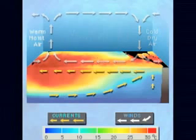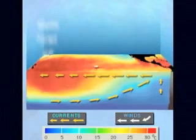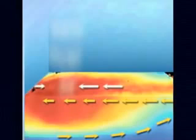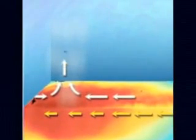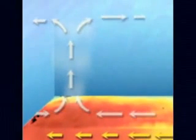As warm, moist air rises in the western tropical Pacific, its temperature drops. The cooler air causes moisture to condense, creating enormous rain-producing clouds.